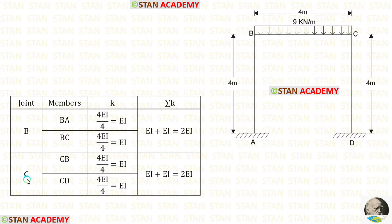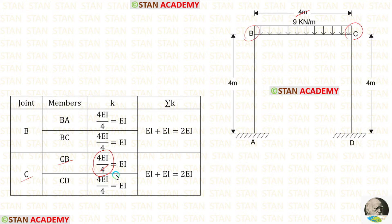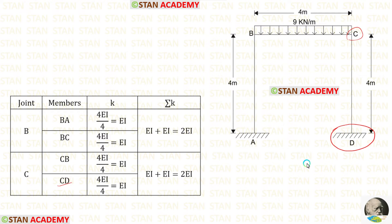Now let us find the stiffness values at joint C. For CB, from joint C we look at point B, which is continuous. Using 4EI/L with length 4, the stiffness of CB is EI. For CD, from joint C we look at point D, which has a fixed support. Using 4EI/L with length 4, the stiffness of CD is also EI.